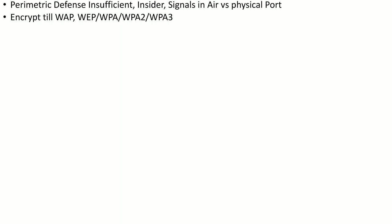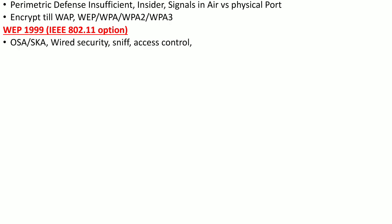The first protocol is Wired Equivalence Privacy, WEP, introduced in 1999 as an optional protocol in 802.11. The 802.11 standard introduced two kinds of authentication: open system authentication, where a wireless device does not need to authenticate while connecting, and shared key authentication. WEP was part of shared key authentication, and its purpose was to introduce the same level of security as a wired LAN — hence the name Wired Equivalence Privacy.